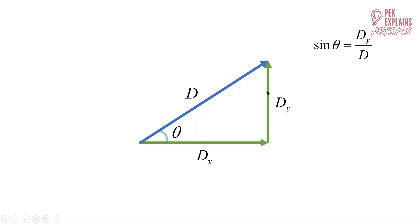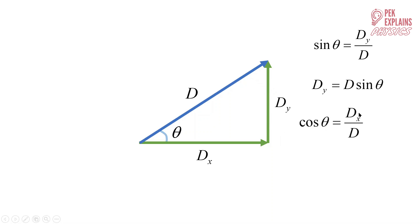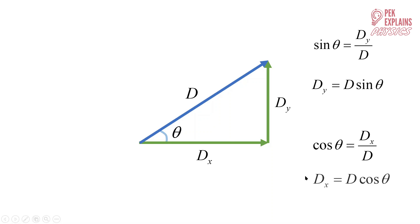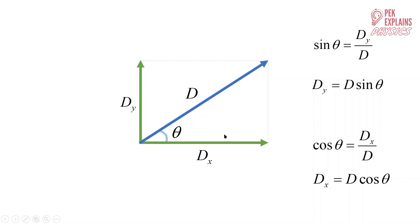So sine theta gives us DY over D. Multiplying both sides by D, we get DY equals D sine theta. We can also use cosine theta — cosine theta is adjacent over hypotenuse, which is DX over D. So DX equals D cosine theta.